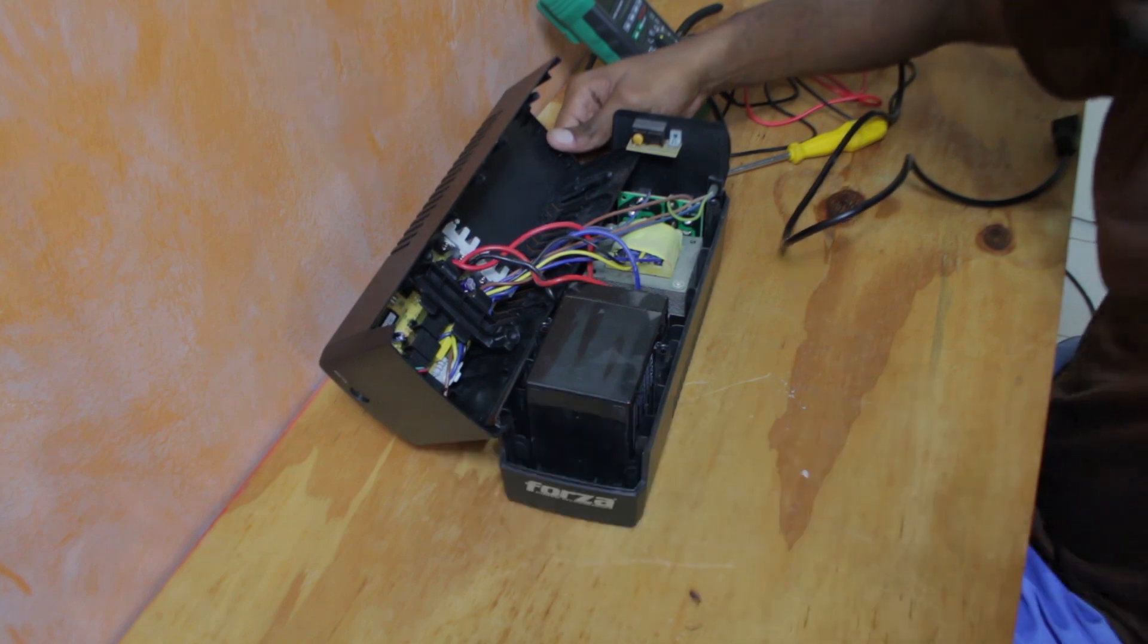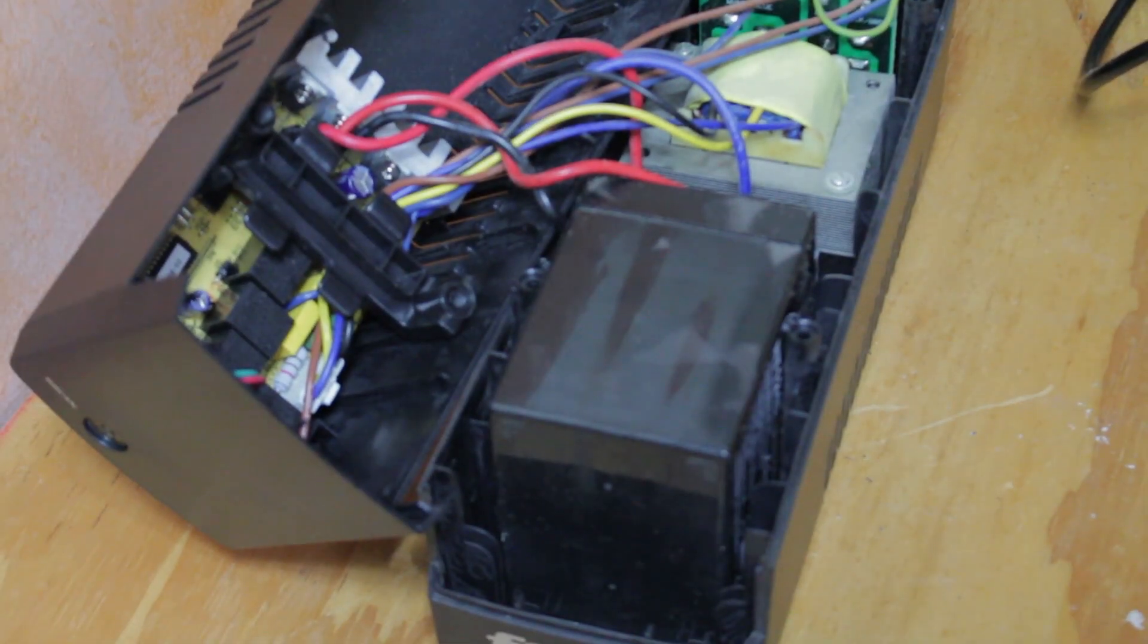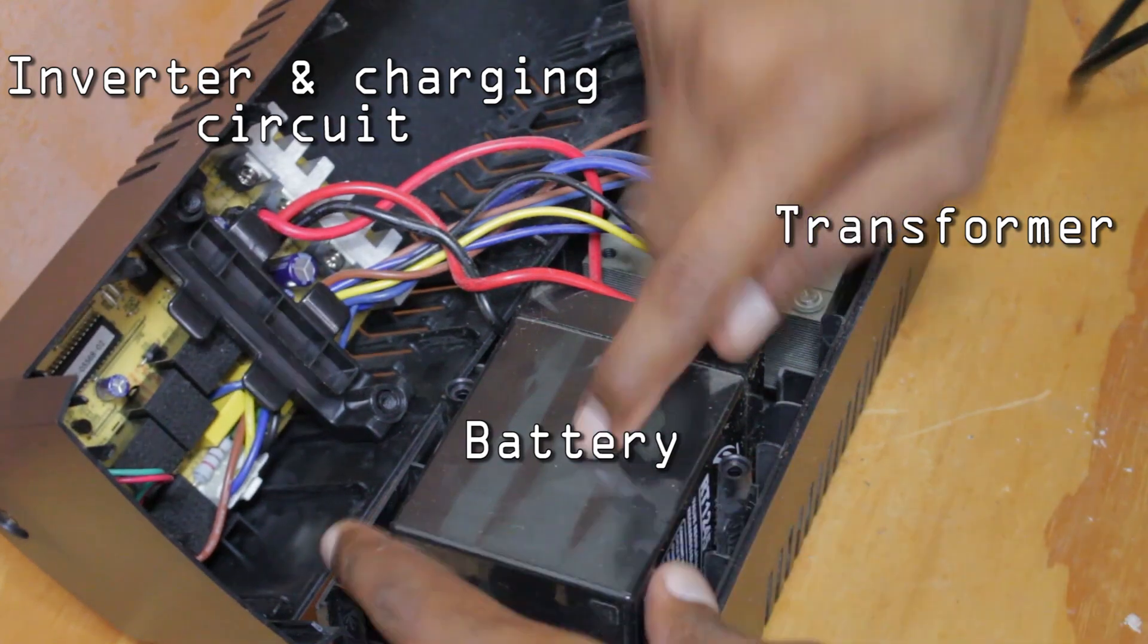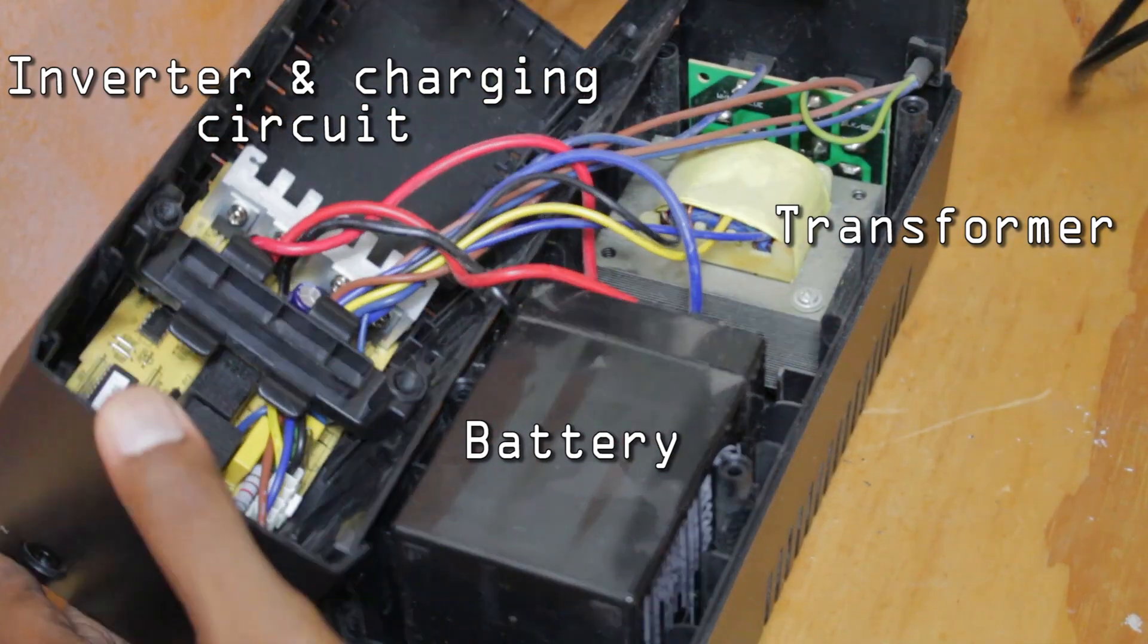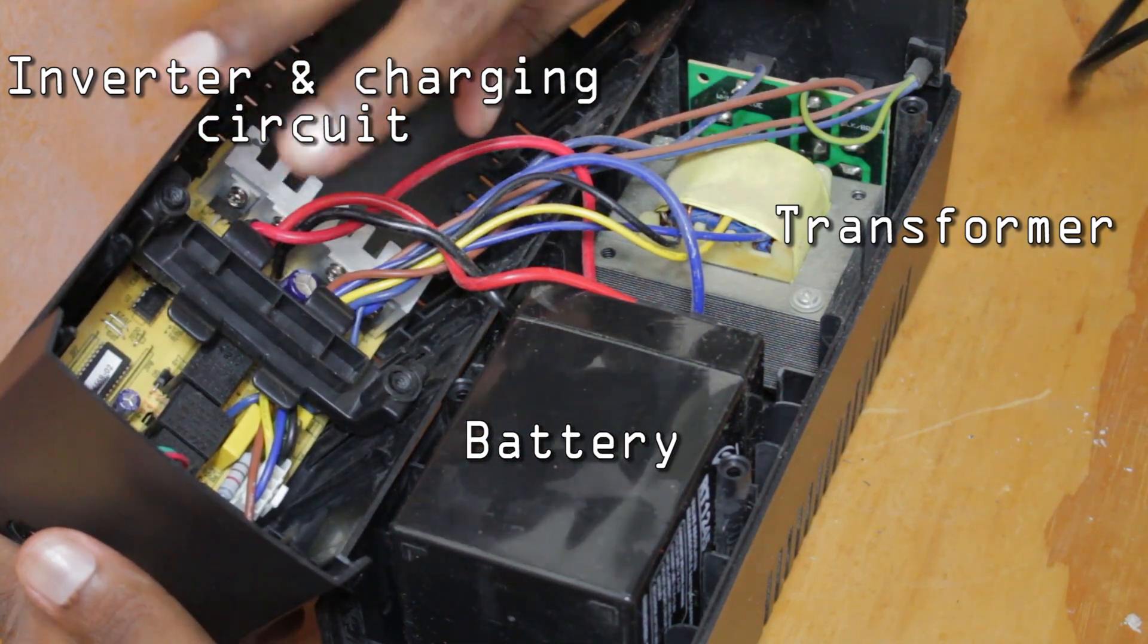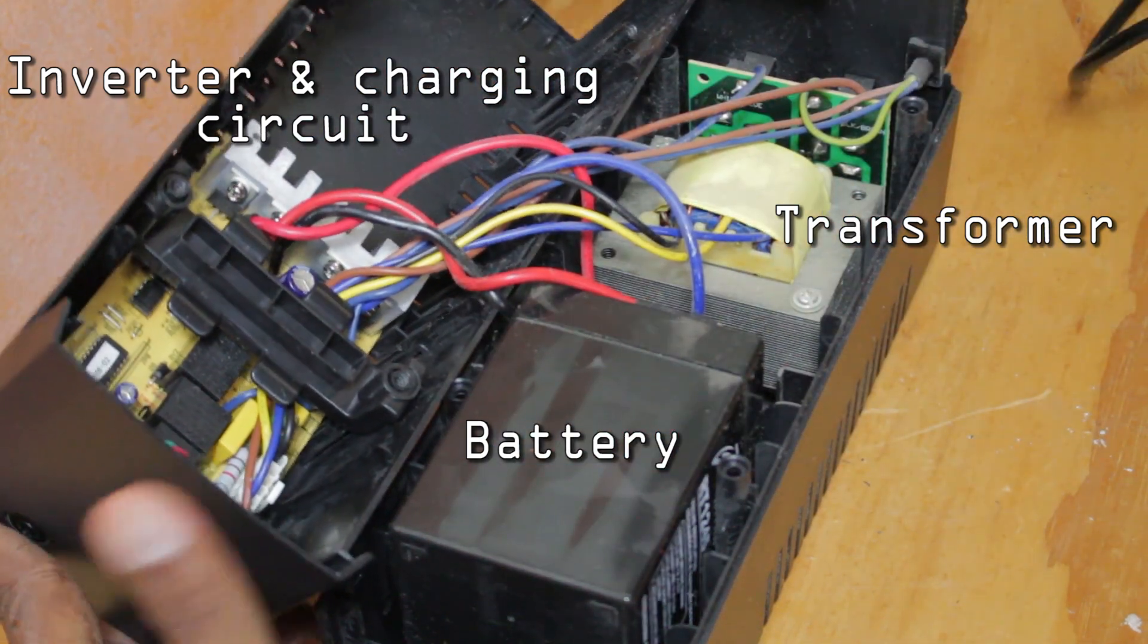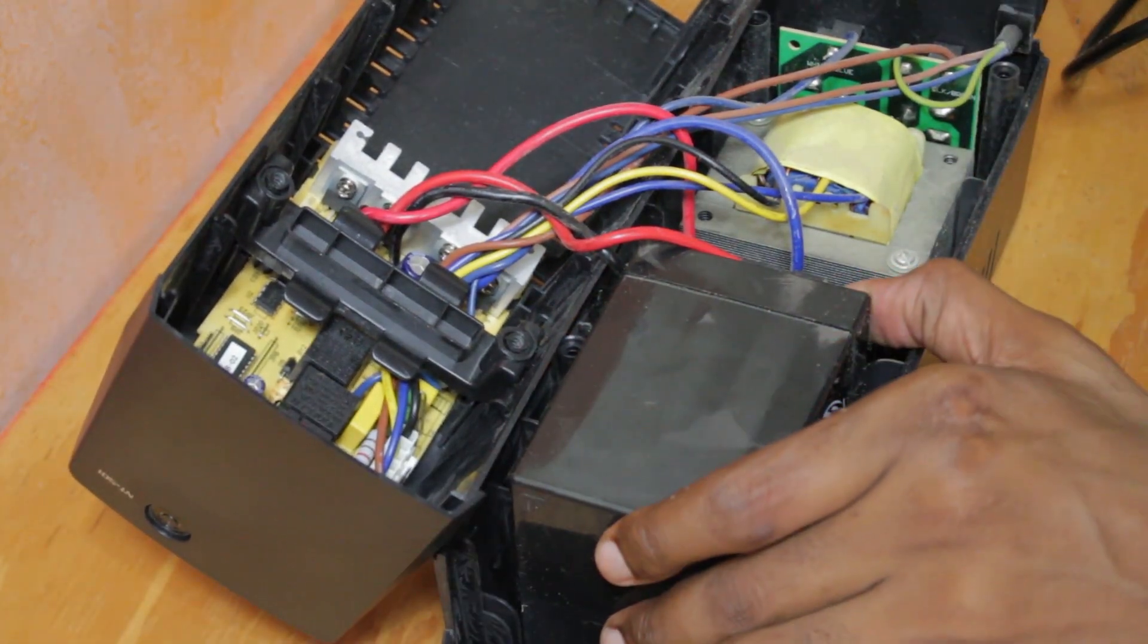So this is what the inside looks like. This is the battery, this is the transformer, and this is the inverter circuit. This is where everything happens, where it converts the DC voltage into AC voltage.